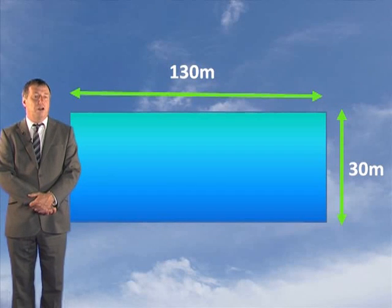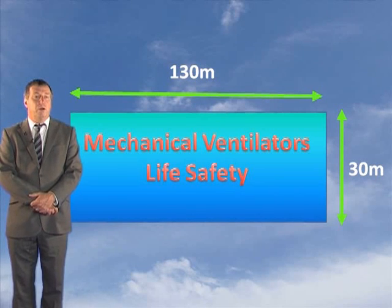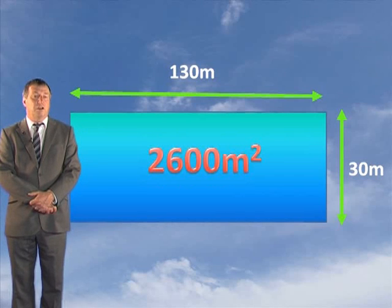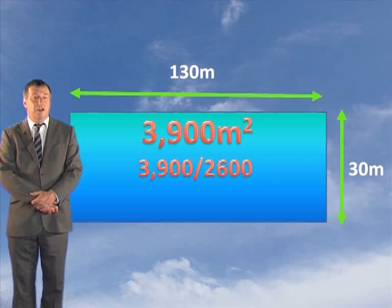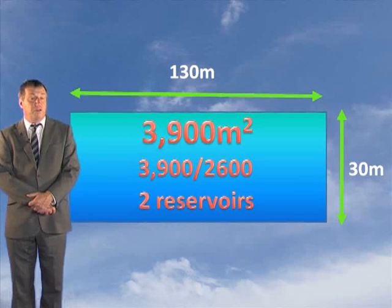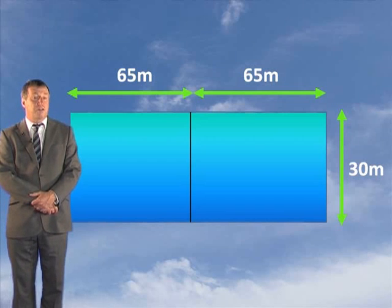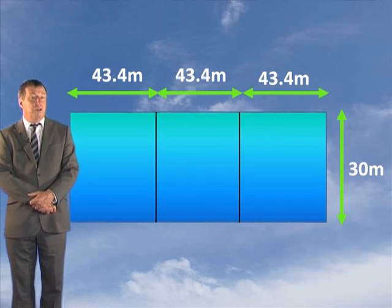Example three: determine the minimum number of reservoirs for a large out-of-town retail shop building 130 meters by 30 meters fitted with mechanical fans for life safety purposes. The maximum size is 2,600 square meters and our building is 130 by 30, which equals 3,900 square meters. We need a minimum of two reservoirs, as two times 2,600 is 5,200 square meters, which is greater than the building area. However, the 60-meter linear dimension limit applies to mechanical extract systems as well. Since one dimension is bound to exceed 60 meters, this building will in fact need three reservoirs.